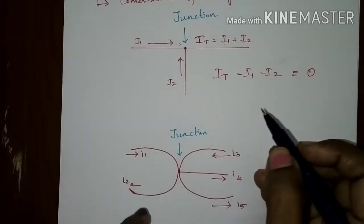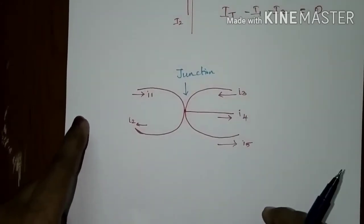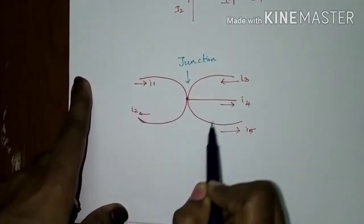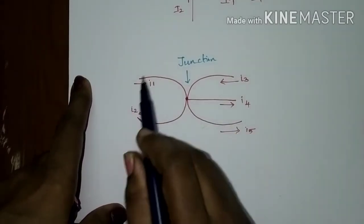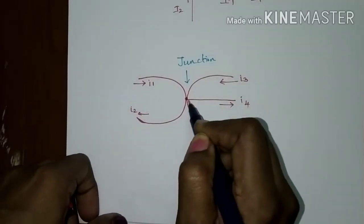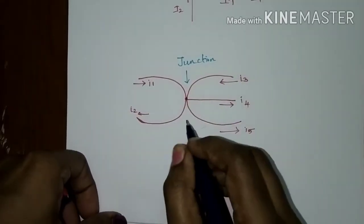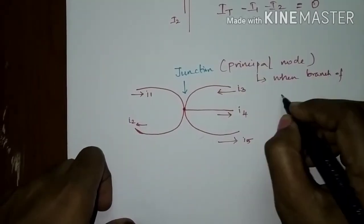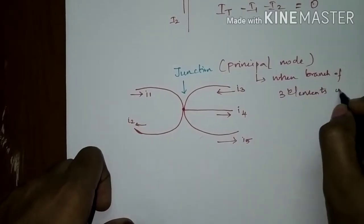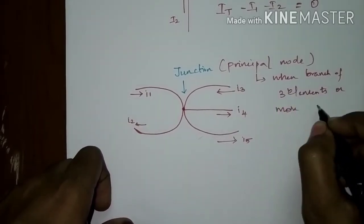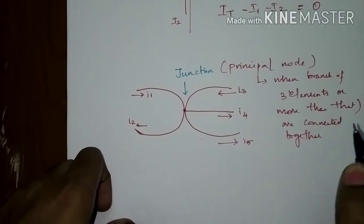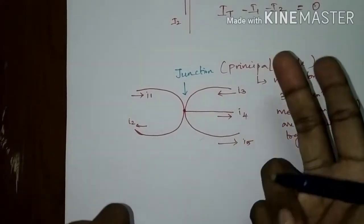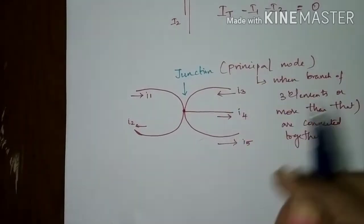Take another example of this junction — it is a principal node. This node or junction is formed by five elements; five branches are connected together at a junction, and that junction is termed a principal node. When three or more branches are connected together, that node is said to be a principal node. If two elements are connected, that node is said to be a simple node.